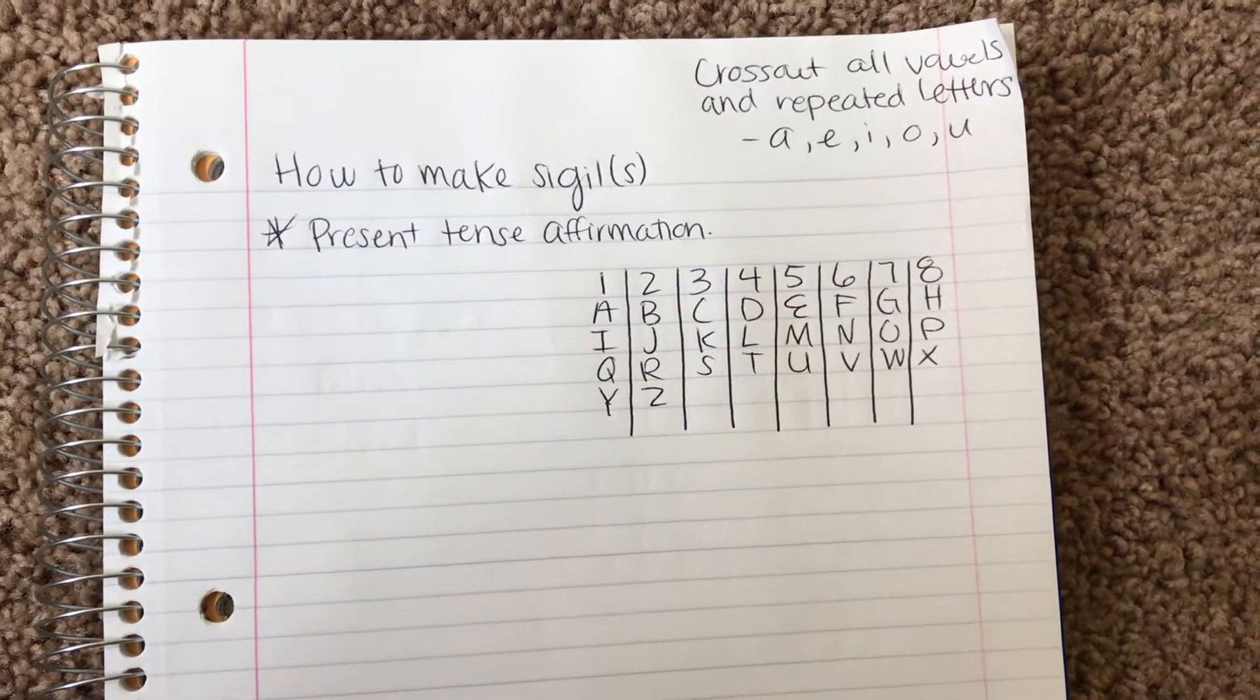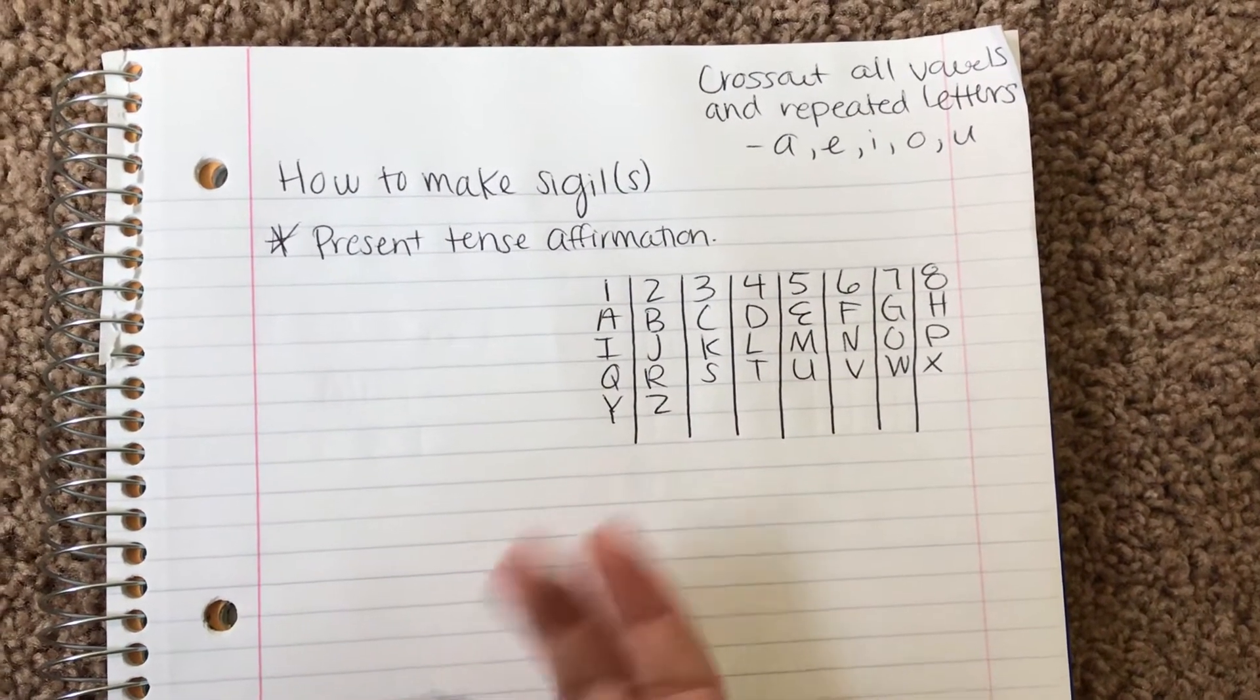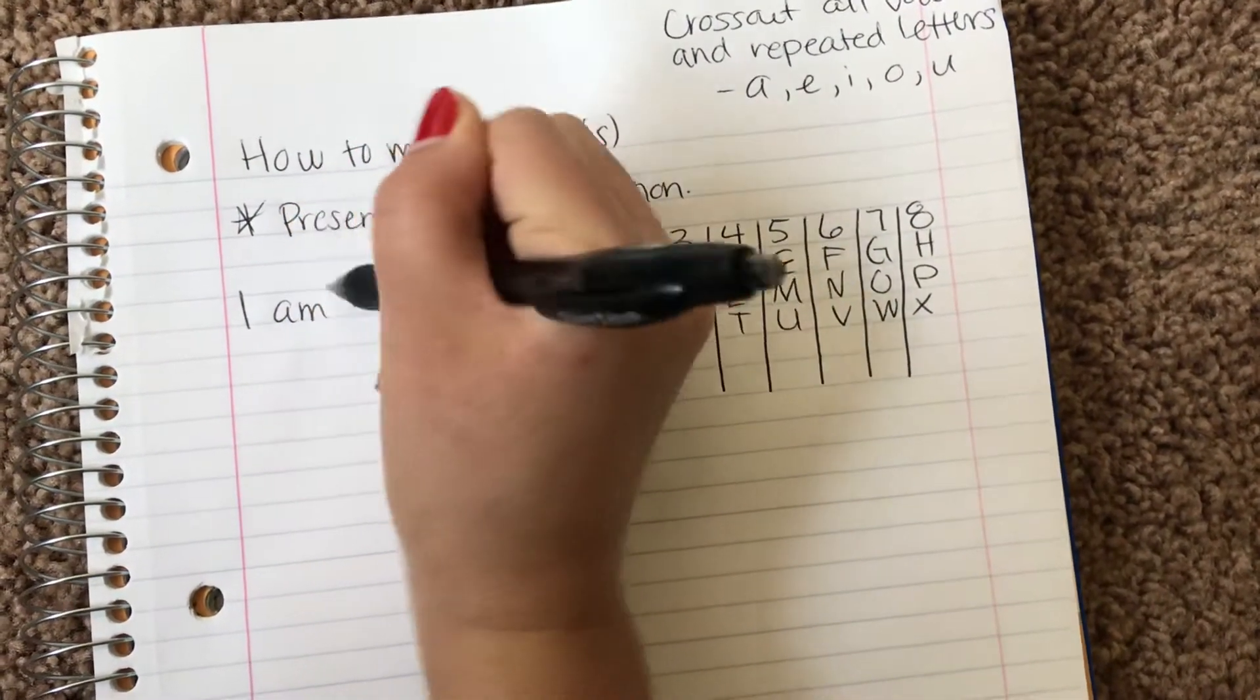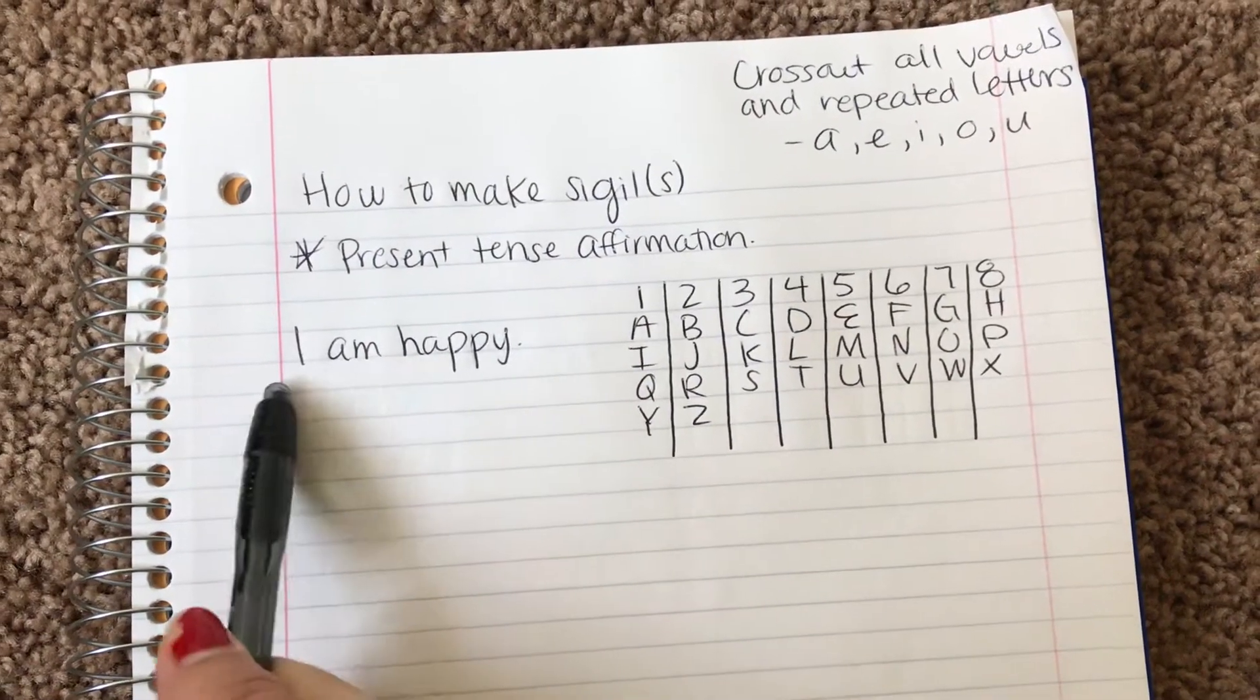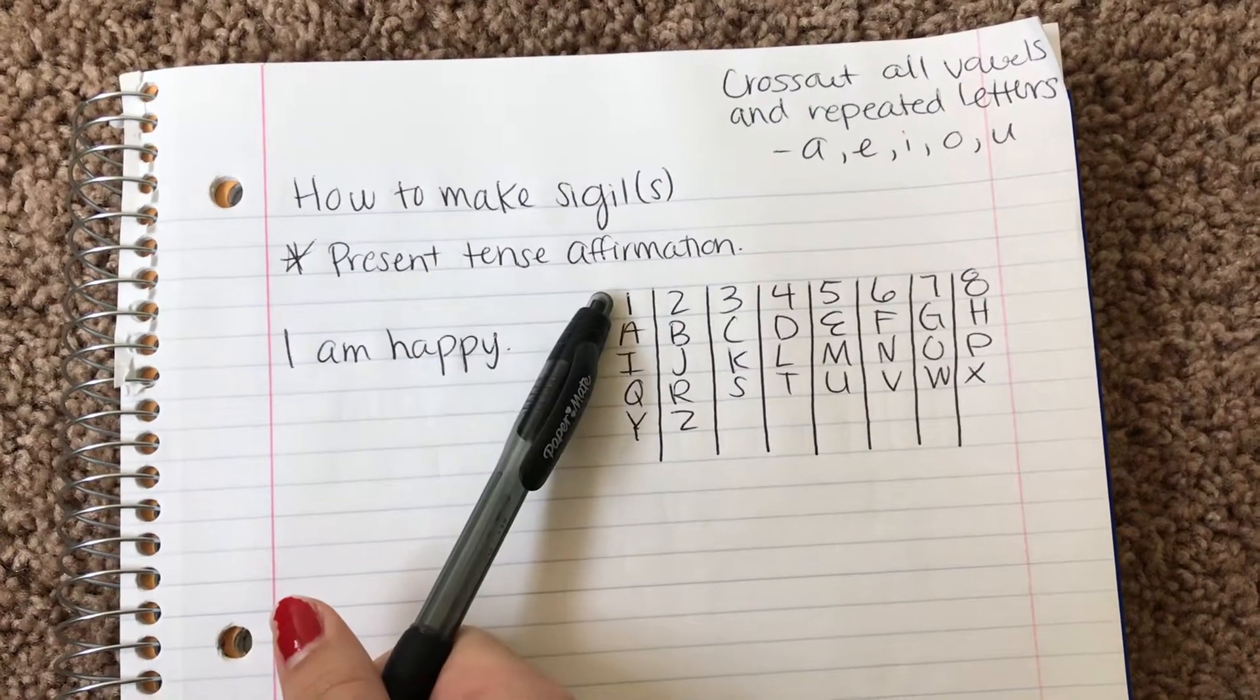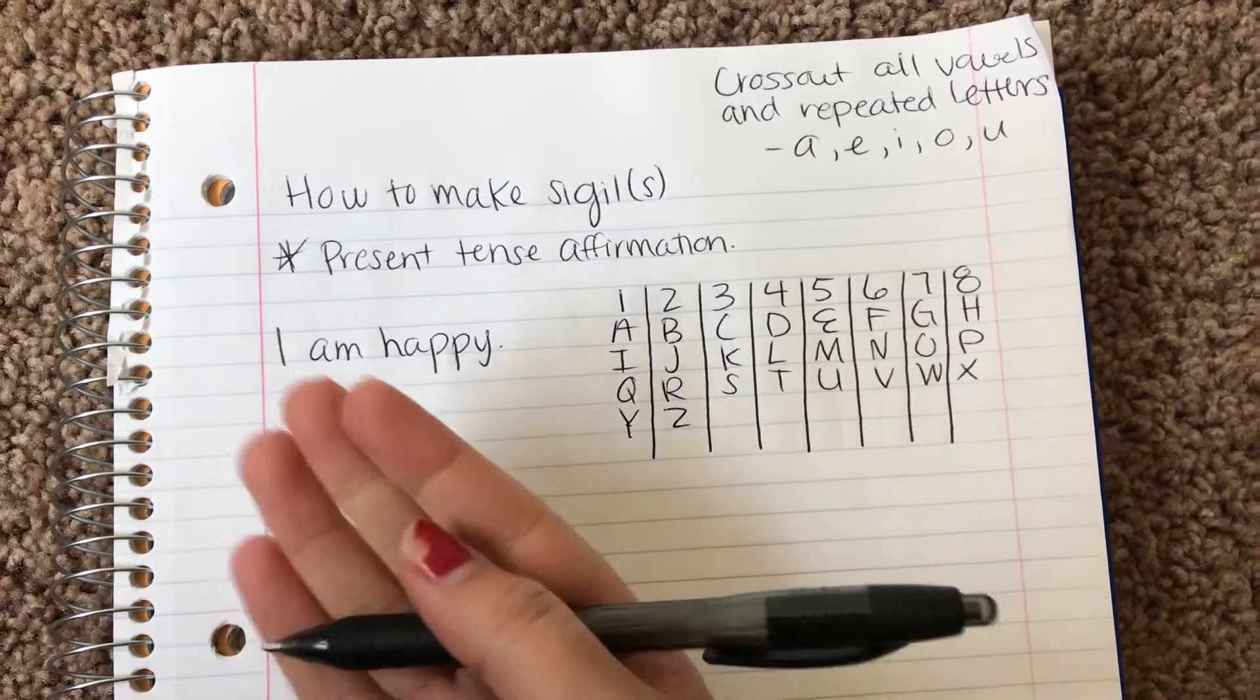So for today I wanted to show you how to make a sigil or sigils depending how many you're going to make. I want my sigil to basically, the intention is I am happy. So you want to write an affirmation in the present tense. And basically what a sigil is, it's a symbol.